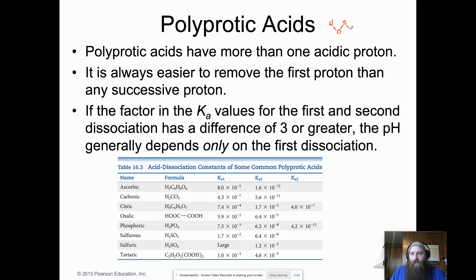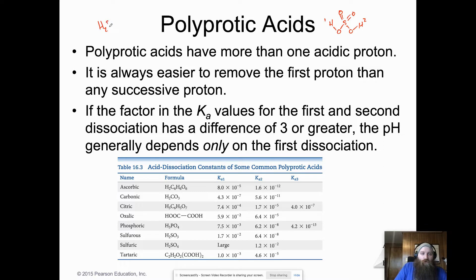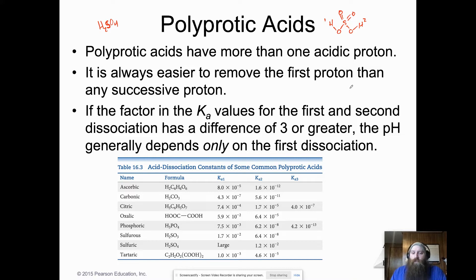H2SO4 is sulfuric acid. Here's the Lewis diagram, and we'll say hydrogen one and hydrogen two. This acid is polyprotic — it's got two H's. It's always easier to remove the first proton than the second proton, and the second is easier to remove than the third.